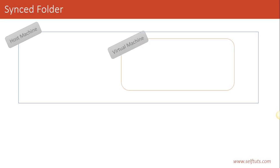In our case, it is a Windows machine, and the next one is the virtual machine — the machine that we are trying to use inside our host machine. Using Vagrant or VirtualBox, we are creating a new machine inside our host machine, and that new machine is called the virtual machine. Virtual machines can be made by different software like VMware or VirtualBox. In this course, we are using a virtual machine through Vagrant.